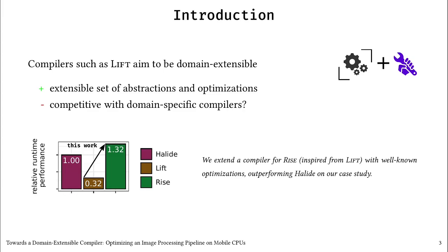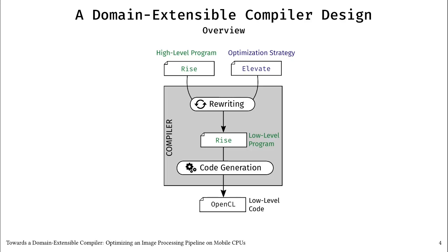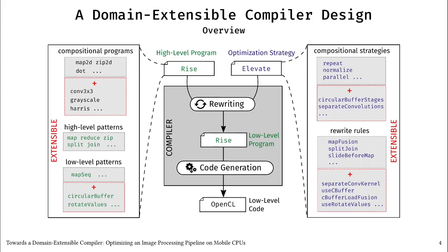How is this domain-extensible compiler designed? We build upon recent work that combines two functional languages. A high-level program is written in RISE to define what to compute, and an optimization strategy is written in Elevate to control optimizations. The compiler then rewrites the high-level program into a low-level program according to the optimization strategy. The obtained low-level program explicitly encodes implementation decisions, and low-level code such as OpenCL can be generated from it. Crucially, both languages are extensible.